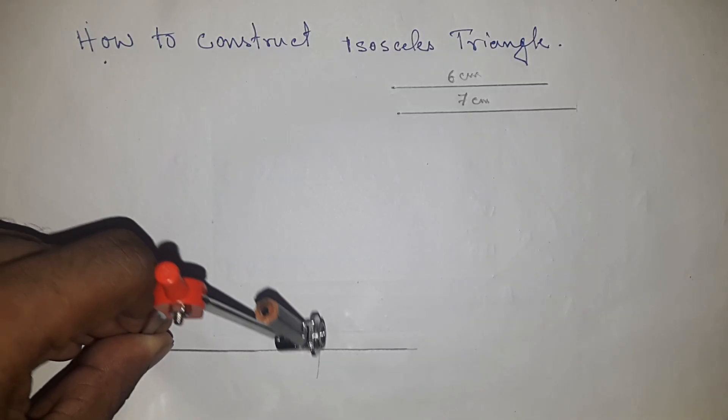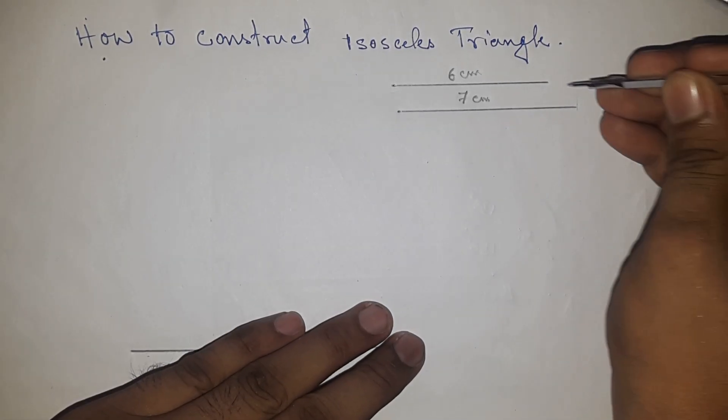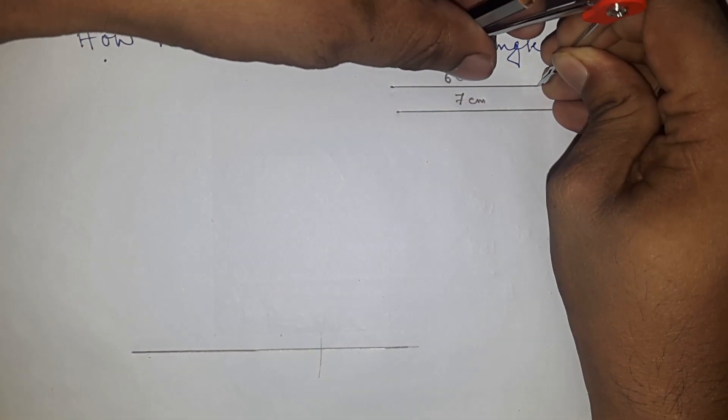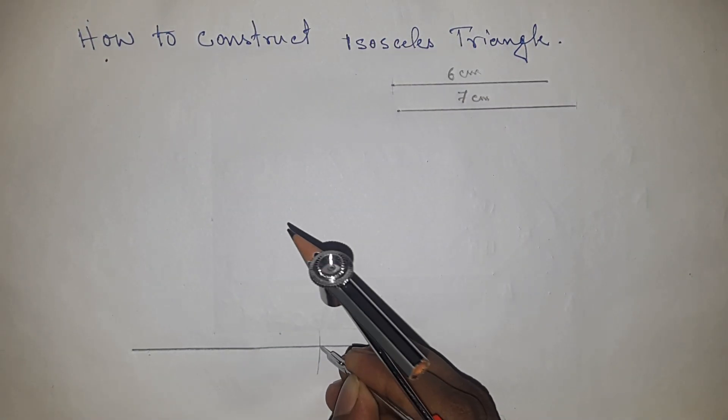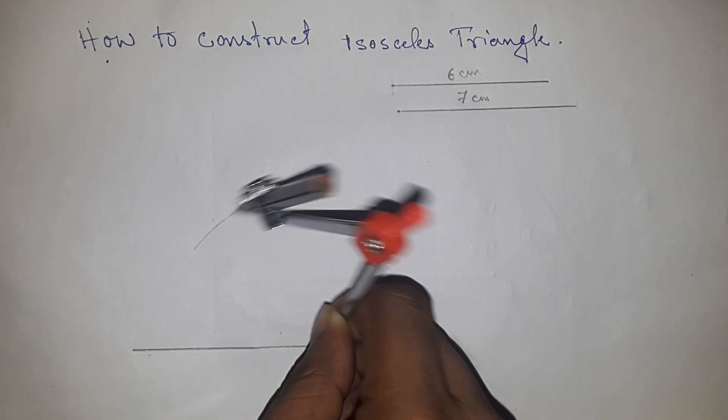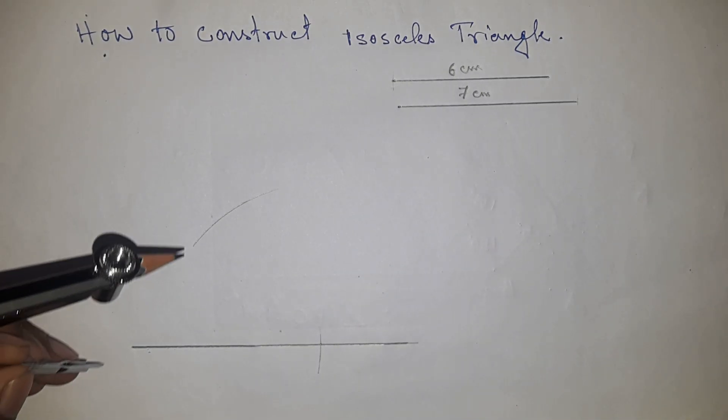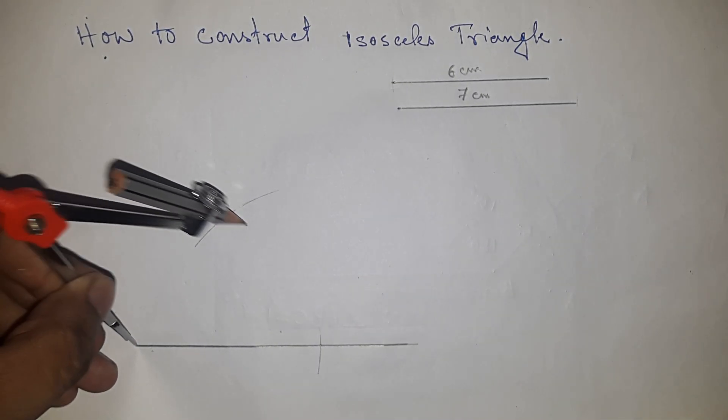Cut the line this way. Now take the measurement of the smaller side by compass, put the compass here, and draw an arc. With the same length, put the compass here.